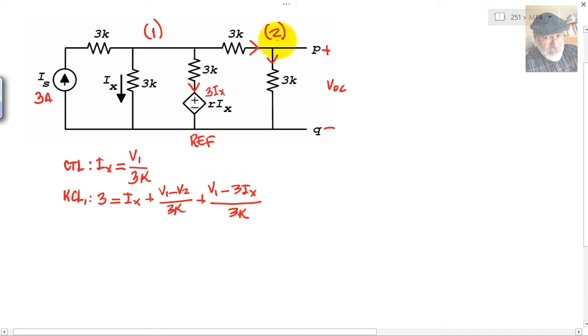And then, KCL for node 2. Two currents, one entering V1 minus V2 over 3 kilos, and one leaving V2 over 3 kilos.